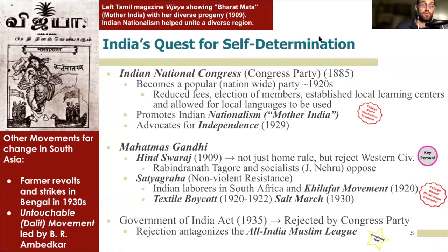It was not just Gandhi and the Indian National Congress pushing for independence during this time. There were farmers' revolts and strikes going on in Bengal. There was also a unique movement led by the untouchables — also known as Dalits, the lowest caste in the social religious caste system — led by B.R. Ambedkar, who would eventually go on to write the constitution of an independent India. India was indeed awash in social and cultural movements demanding greater self-determination on both a national and local level.